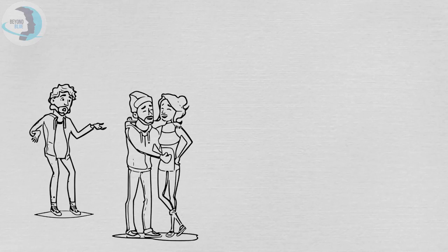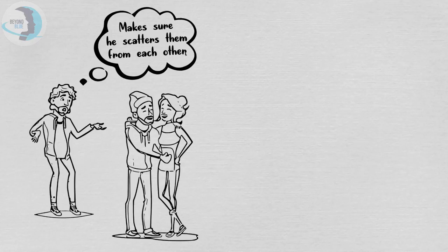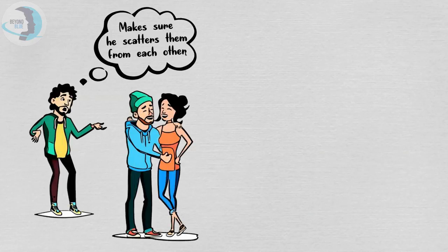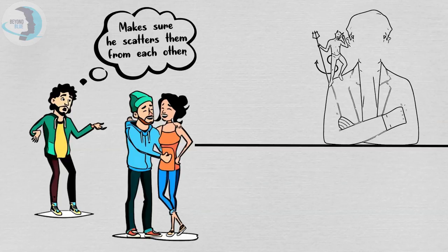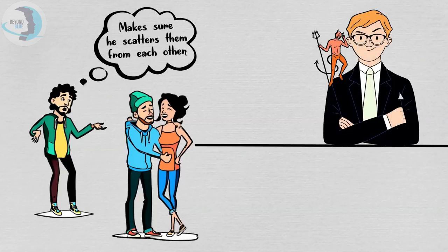When a psychopath sees people being together in happiness and maybe a potential target is there, he comes into their midst and makes sure he scatters them from each other. He makes sure he turns their hearts from each other to him. That's the fun part of his life: turning people against each other so his victim becomes vulnerable for him to prey on.